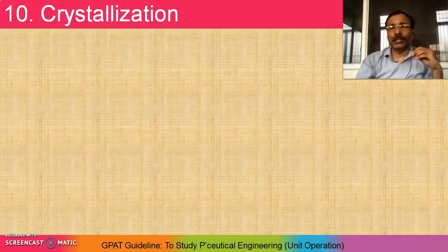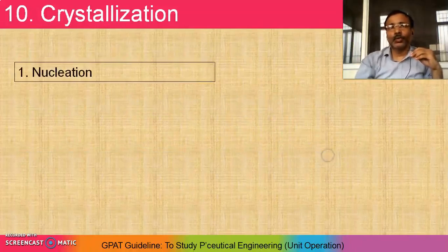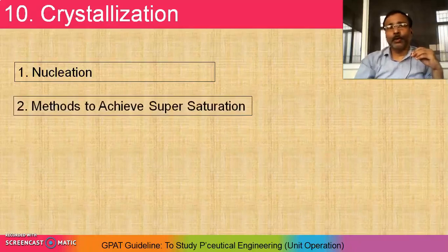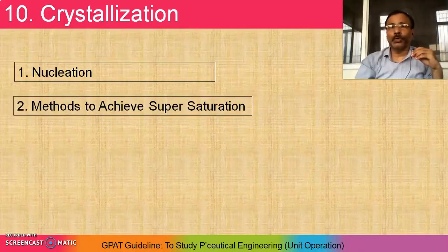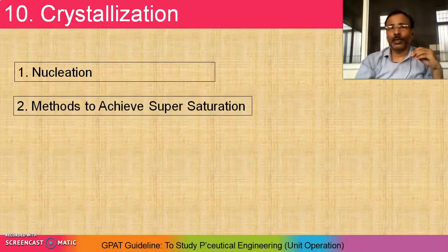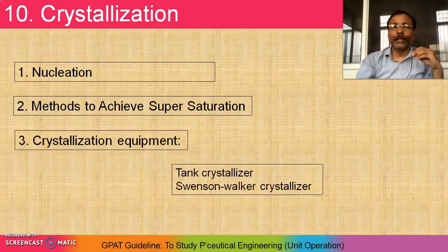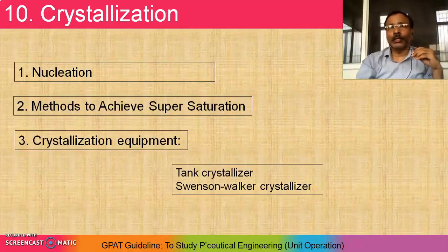Next, crystallization — this is again a conceptual chapter, just like centrifugation. What is nucleation and how nucleation takes place — most important. Most importantly, the methods to achieve supersaturation — once supersaturation is achieved, crystallization will take place. So the method is important for supersaturation. Crystallization equipment includes the tank crystallizer and the Swenson-Walker crystallizer.